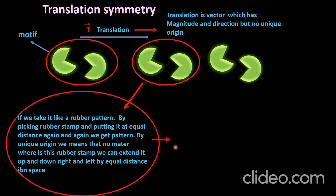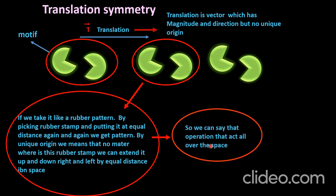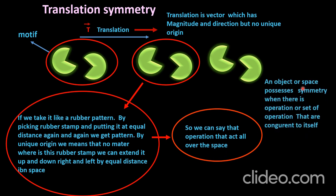The translation operation extends all over the space. An object or space possesses symmetry when there is an operation or set of operations that leave it congruent to itself. Congruent to itself means that by applying the symmetry transformation, we get the same pattern again — there is no difference.